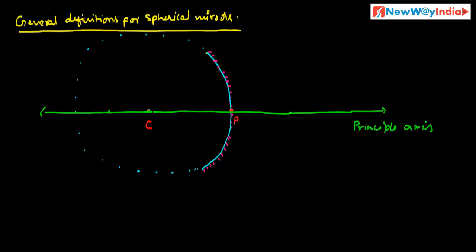An imaginary line passing through the pole and the center of curvature of the sphere is called the principal axis.